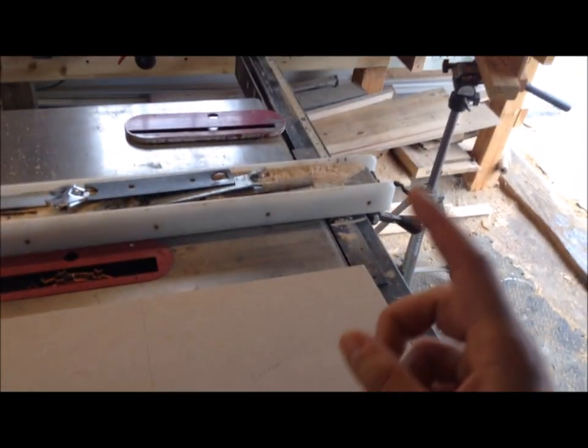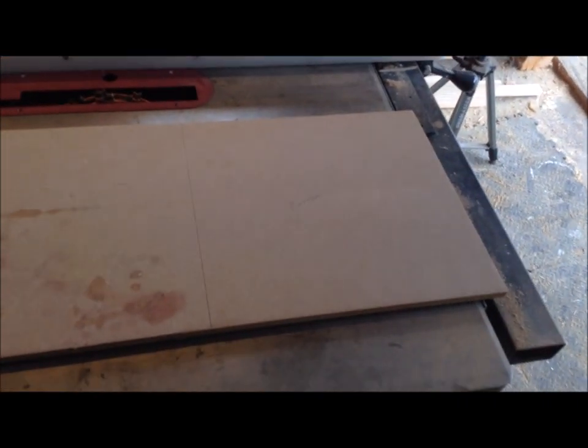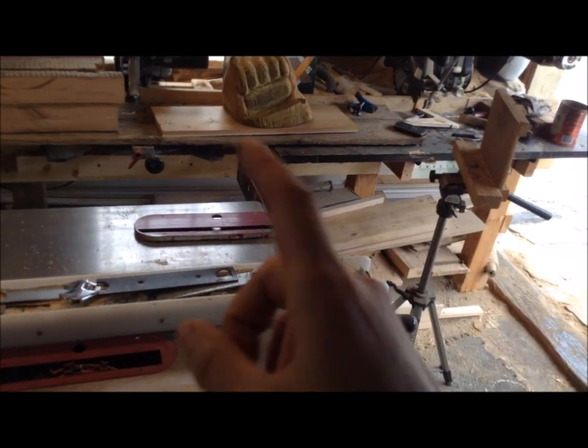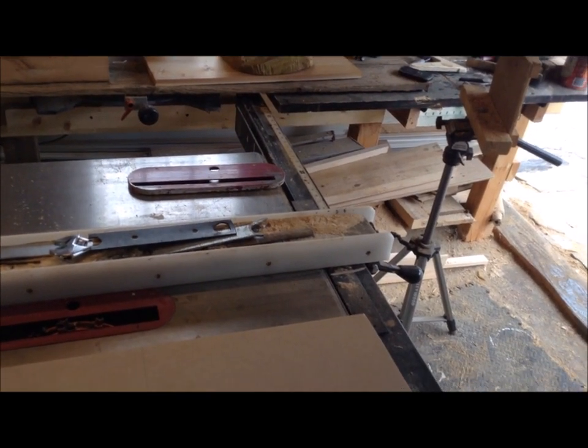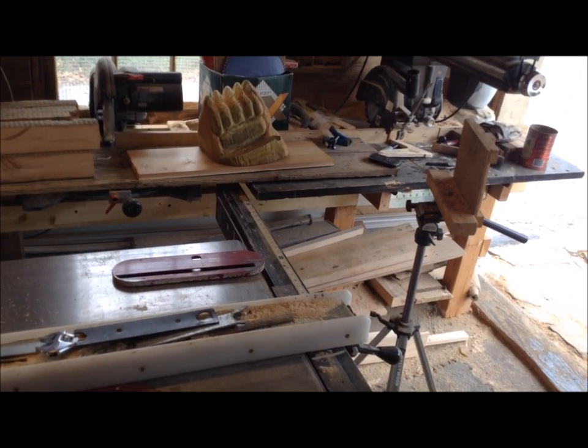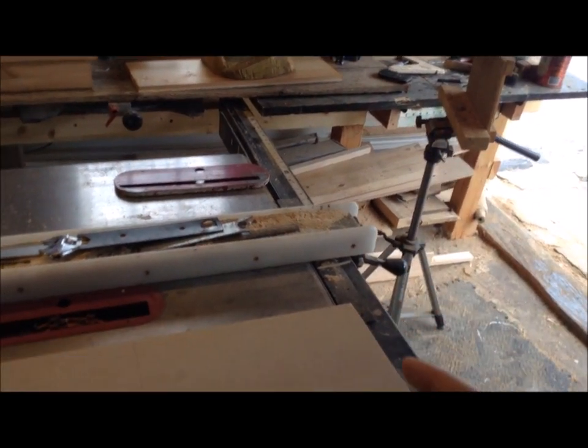Usually I would use my radial arm saw to cut stuff like this, but I noticed on my last build that the saw and the fence are a little off square. To be perfectly honest, I don't feel like messing with it now. So until that gets fixed, I'm going to be making most of my cuts on the table saw, but you could even use a circular saw for this.